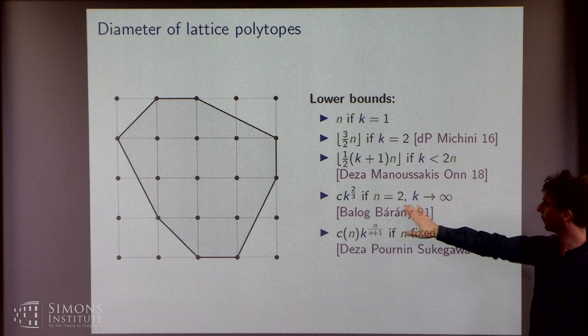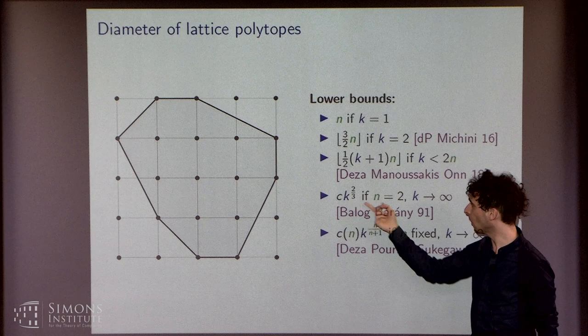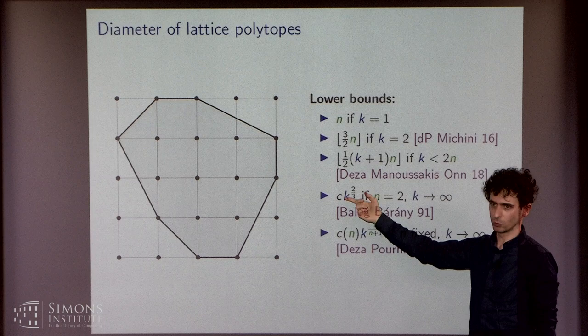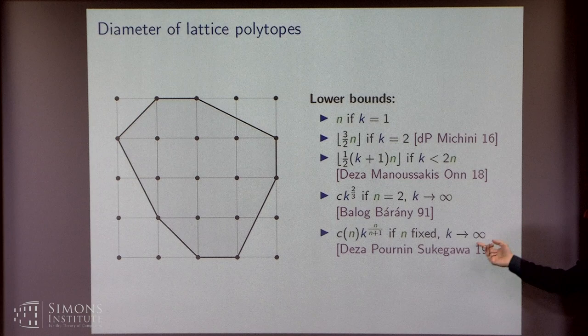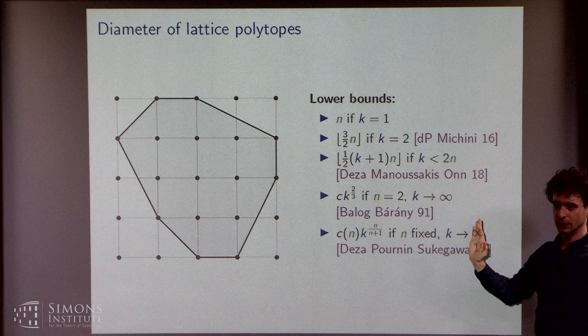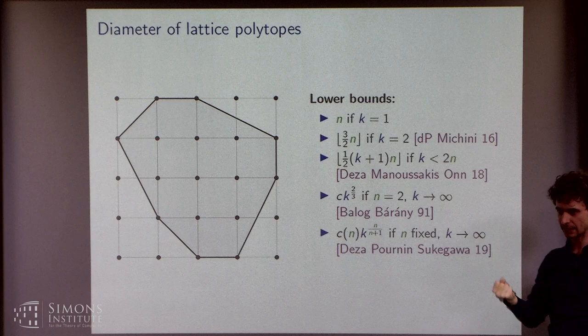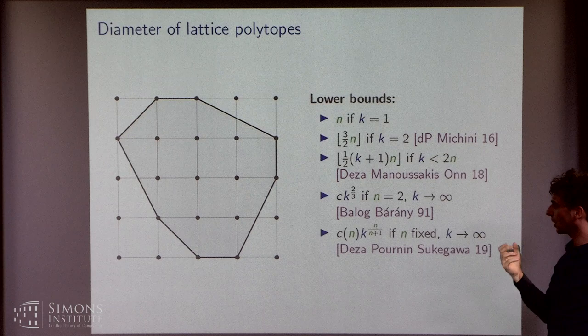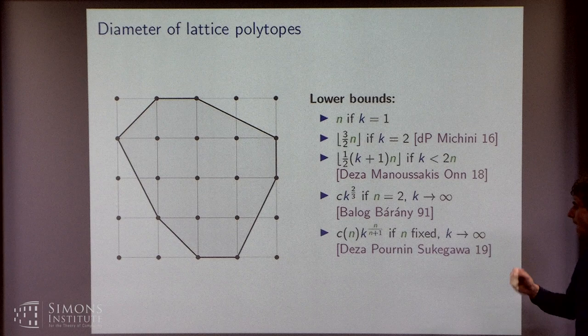What about these other two results instead? As I said, they somewhat talk about the opposite direction, so fixed n. How do these lower bounds grow? For n equal to 2, Balog and Bárány showed that this worst case diameter grows as k to the 2/3 as k goes to infinity. And similarly, for n fixed, Deza, Pournin, and Sukegawa showed that it grows essentially like k to the n/(n+1), so almost linear in k. So a lot of interesting results, and there's still much to do regarding the diameter of lattice polytopes.